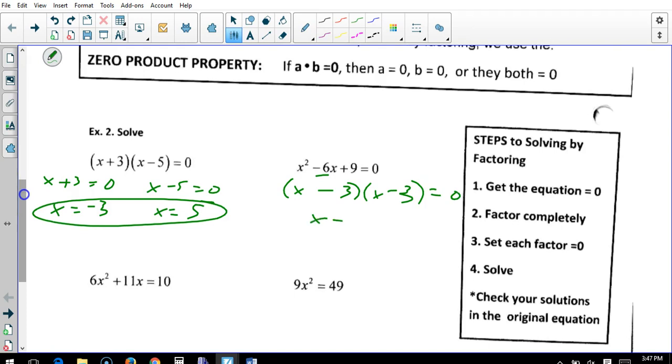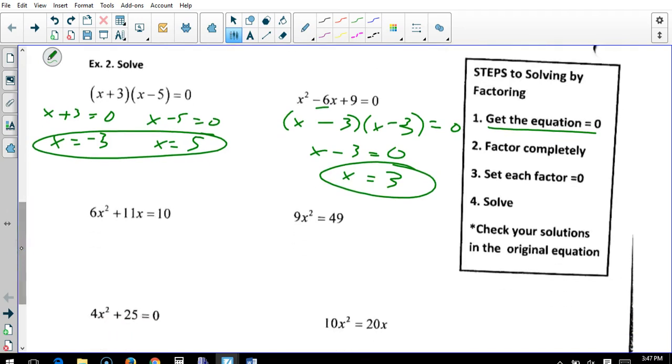And now notice what's a little bit different. Let's go over our steps. We want to keep the equation equal to 0, which this one is not. So to do that, we need to move this 10 over here. 6x squared plus 11x minus 10 equals 0. Now at this point, we can continue with what we've been doing - factoring so it equals 0 then solve.